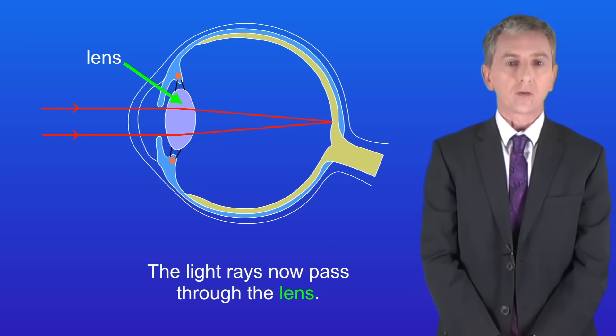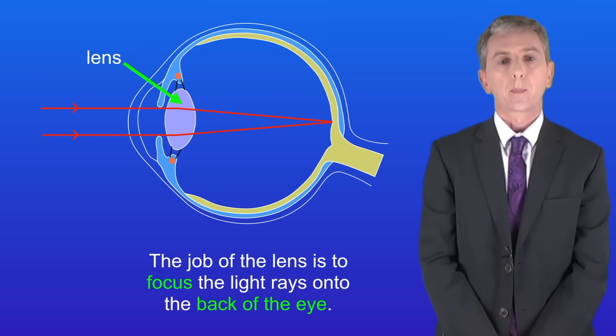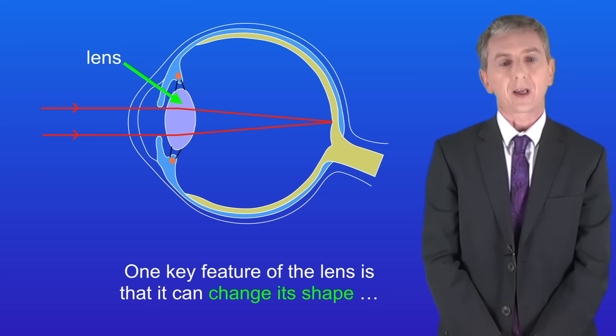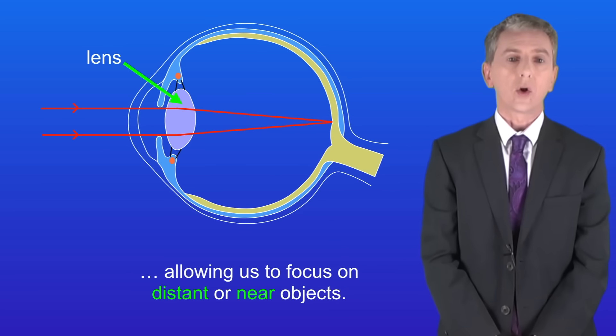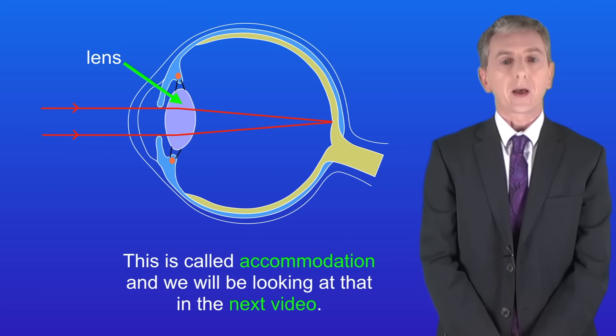The light rays now pass through the lens. The job of the lens is to focus the light rays onto the back of the eye. Now one key feature of the lens is that it can change its shape allowing us to focus on distant or near objects. This is called accommodation and we'll be looking at that in the next video.